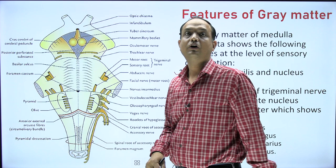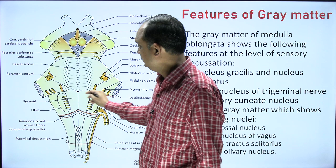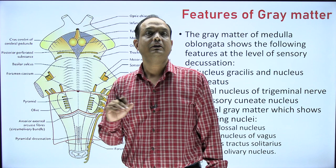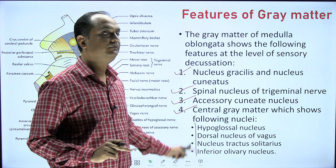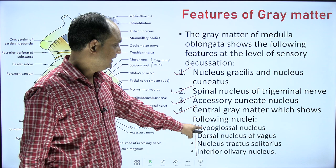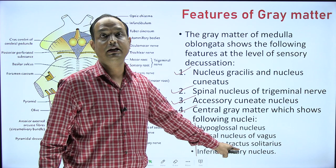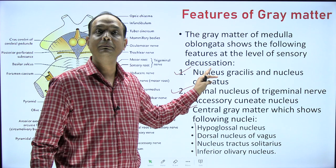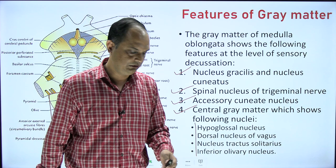When dealing with the medulla, you are dealing with the lower four cranial nerves: 9, 10, 11, and 12. You will find the cranial nuclei of 9, 10, 11, and 12 here. So you will have the hypoglossal nucleus, nucleus of vagus, nucleus for taste, and olivary nucleus. Apart from that, there are nuclei like nucleus gracilis, cuneatus, spinal nucleus, and accessory cuneate nucleus.